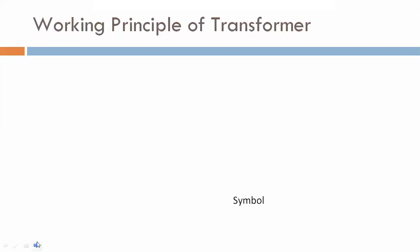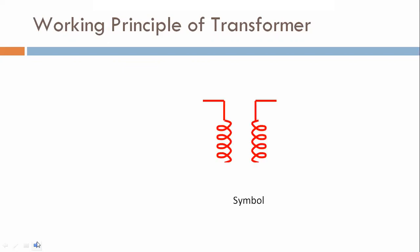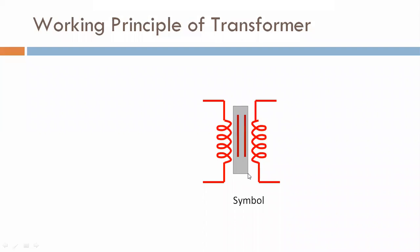Here we are discussing the working of transformer. This is the symbol of transformer. Here we are seeing two lines — in a transformer, those two lines between two windings represent the core, and this is the coil. The transformer can increase or decrease the voltage with a corresponding decrease and increase in current respectively.